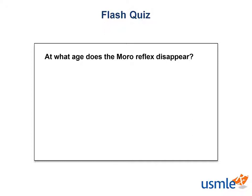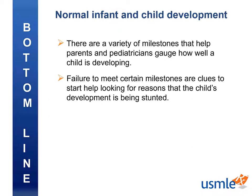Flash Quiz! At what age does the Moro reflex disappear? The Moro reflex disappears at 3 months old. In this lecture, we learned that there are a variety of milestones that help parents and pediatricians gauge how well a child is developing, and failure to meet certain milestones are clues to start looking for reasons that the child's development is being stunted. Thanks for watching, and be sure to click thumbs up if you enjoyed this video.